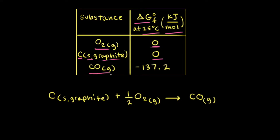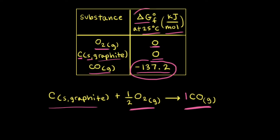The value for carbon monoxide is not equal to zero. Delta G naught is equal to negative 137.2 kilojoules per mole. So if we think about forming one mole of carbon monoxide from its elements — carbon and oxygen — the elemental form of oxygen is O2 gas and the elemental form of carbon is the solid form graphite. This value represents the standard change in free energy for the formation of one mole of carbon monoxide from its elements in their standard states.